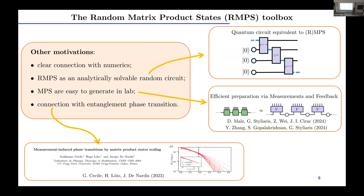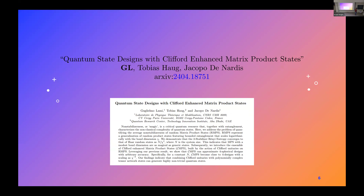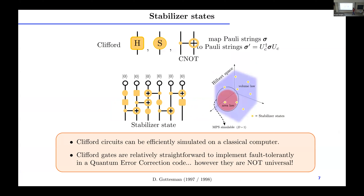Here is a motivational slide. I already mentioned the efficient preparation via measurement and feedback of MPS, so random MPS can be generated in the lab quite easily. I will also briefly mention another work in which we found a quite nice connection between random MPS and the entanglement transition. Now we start with the first work, where we address the non-stabilizerness properties of such MPS.